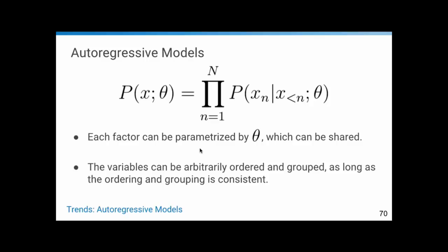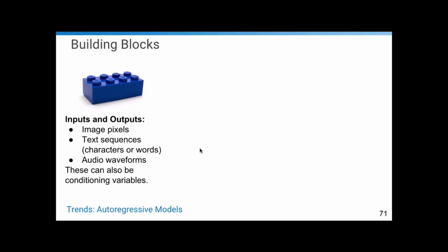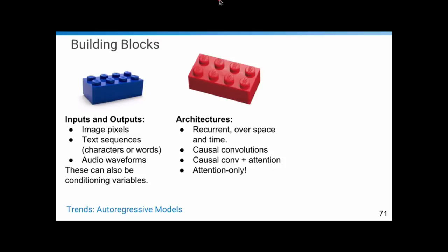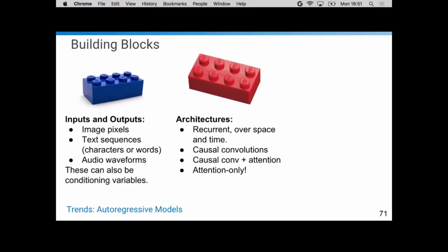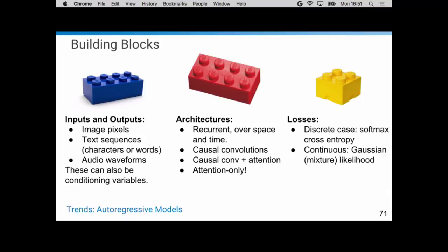The building blocks: inputs and outputs can be images, text, or raw audio waveforms, and can also serve as conditioning variables — for example in text-to-image or text-to-speech synthesis. Architectures span everything discussed: recurrent networks over space and time, causal convolutions, convolutions with attention, and even attention-only architectures. For losses, you can use cross-entropy loss or, in the continuous case, mixtures of Gaussians or mixtures of logistics. For audio, the input to the network is just the raw waveform. In WaveNet, you go through several layers of causal convolutions where each output only depends on inputs from prior time steps.